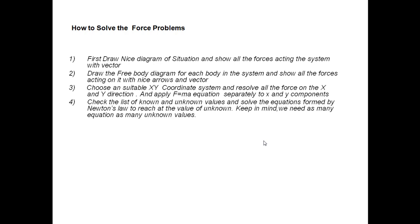Once we know all these things, we need to check what values are known to us and what are unknown. Once we know the known and unknown values, we solve the equations formed from F equals Ma in the above steps to reach the unknown values. Always keep in mind: the number of equations should always equal the number of unknowns. If you have three unknowns, you must have three equations, otherwise you won't be able to solve them.